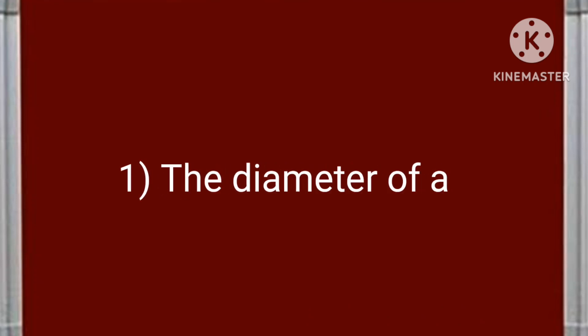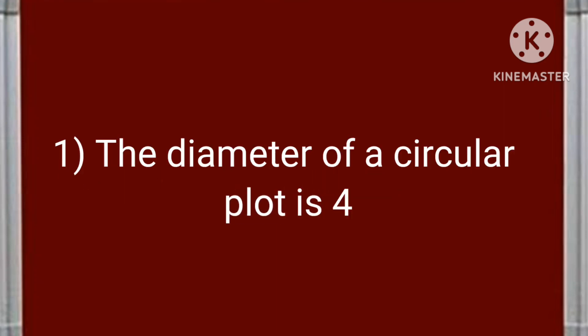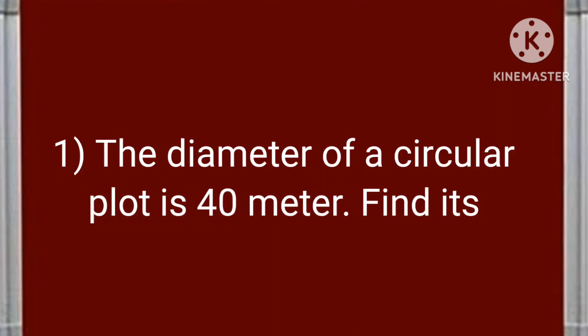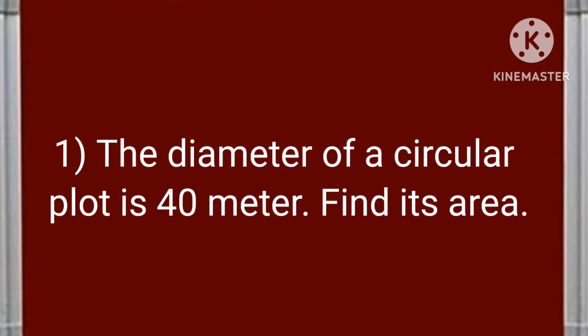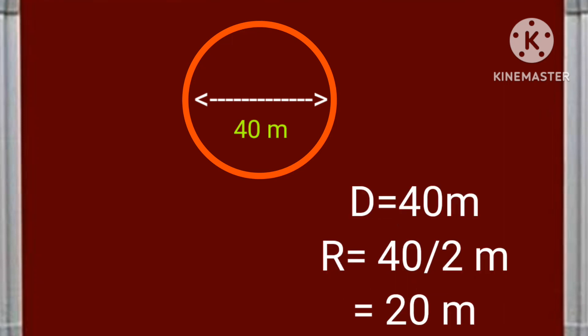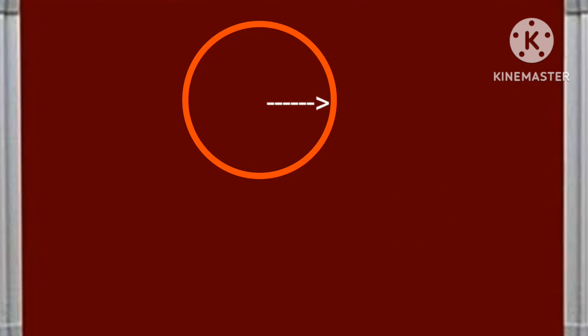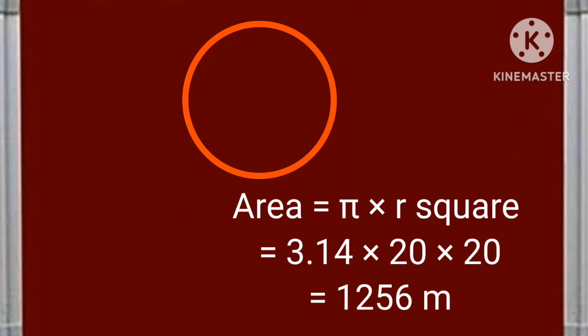Our first problem is the diameter of a circular plot is 40 meter. Find its area. Now the diameter of the circle is 40 meter so radius will be 40 divided by 2 means 20 meter. Now the area of the plot will be pi into r square that is 3.14 into 20 square means 1256 meter square.